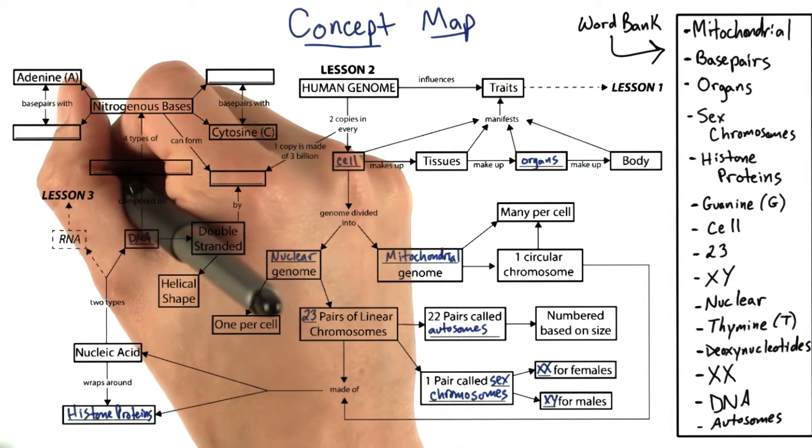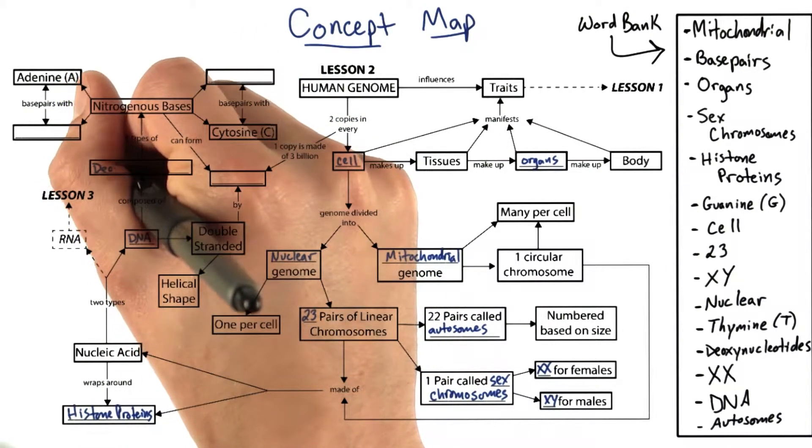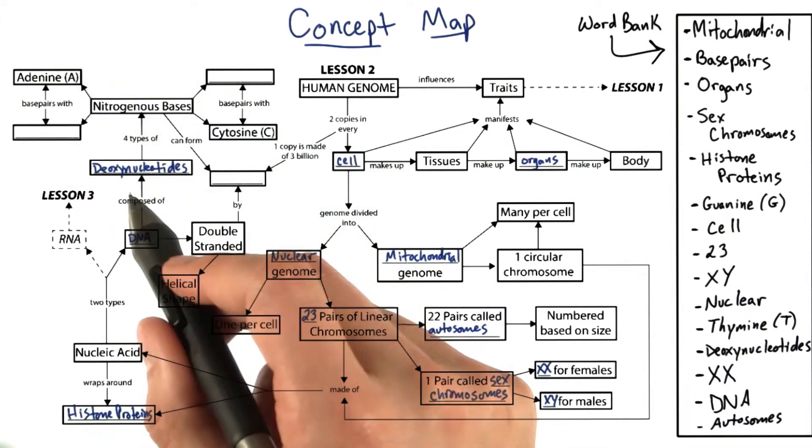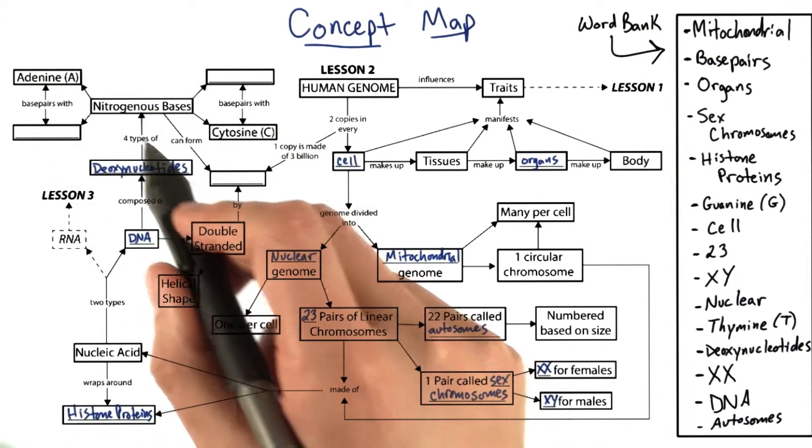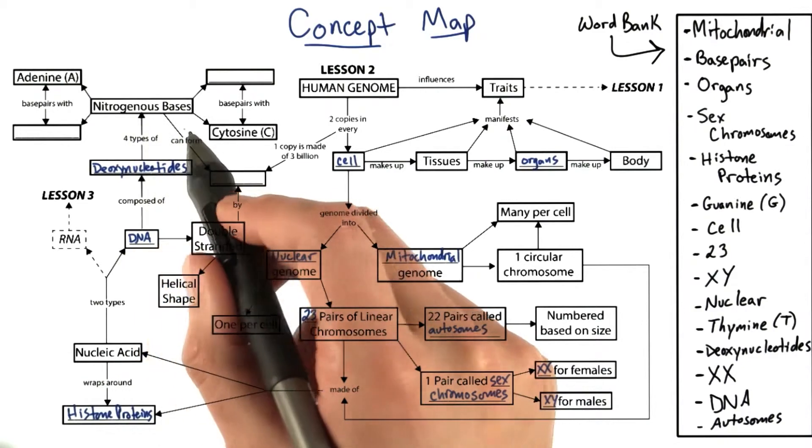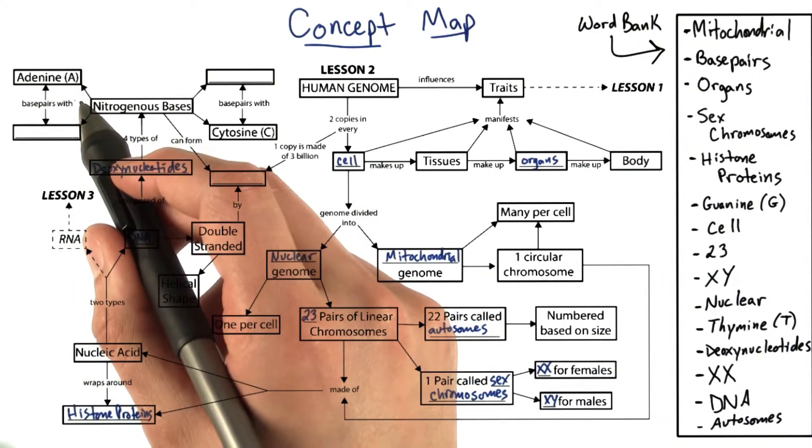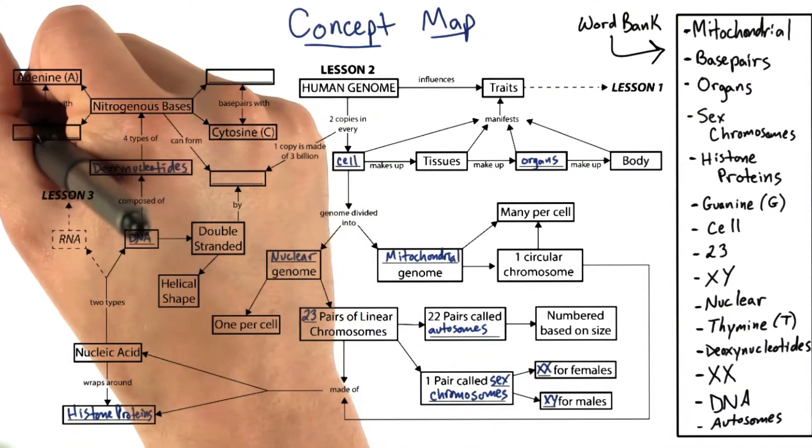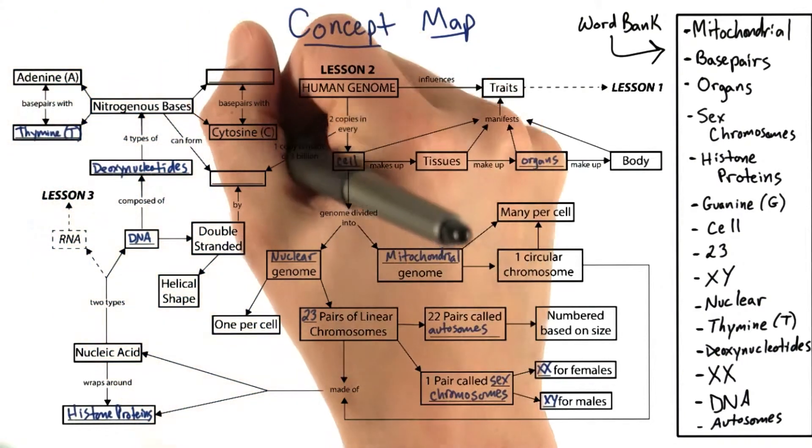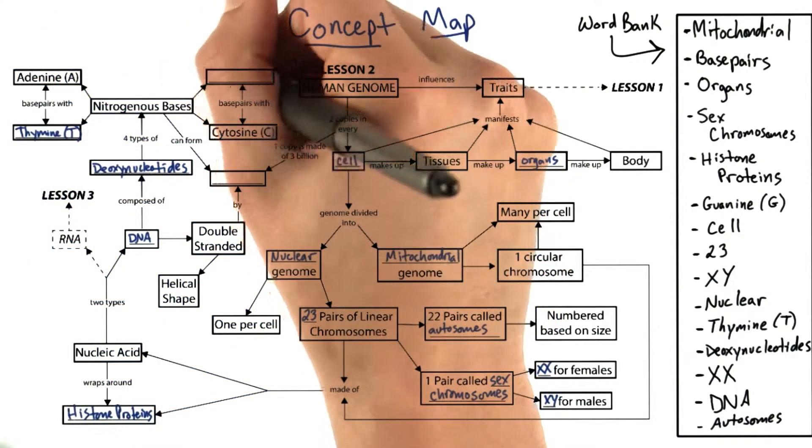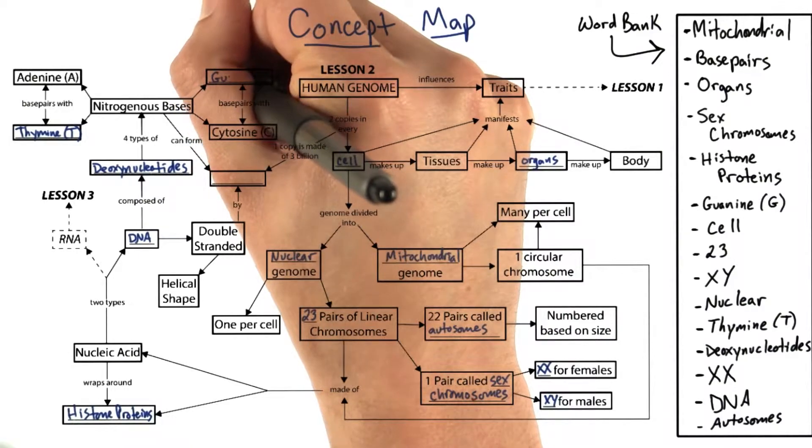DNA is composed of deoxynucleotides. There are four different types of deoxynucleotides that all differ in which nitrogenous base they contain. There is adenine, or A, which can base pair with thymine, or T. And cytosine, or C, can base pair with guanine, or G.